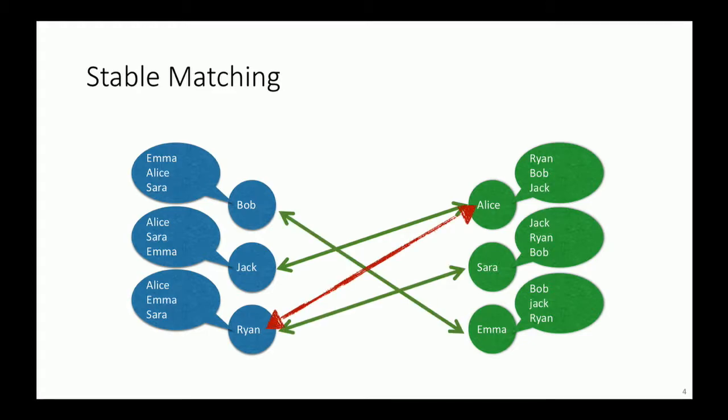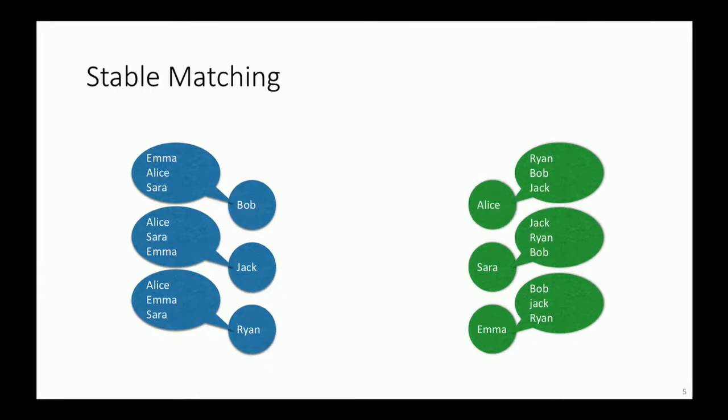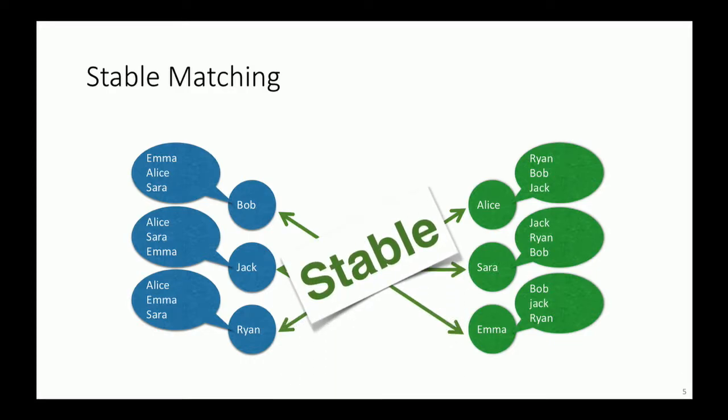Because of this link, as you can see, Alice prefers Ryan over Jack, her already assigned partner based on the preference list, and also Ryan prefers Alice over Sarah, his currently assigned partner. So this is not a stable match. However, if you assign them in this order and there is no such pair that violates the condition, it's a stable match. In the secure stable matching setting, we want to perform stable matching without revealing each party's preferences to any other party.